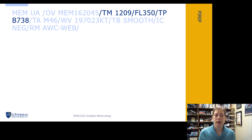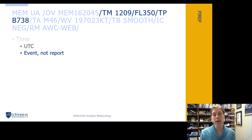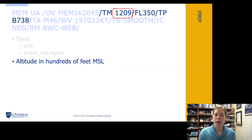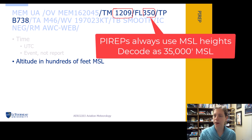Next we have what time the weather was observed, given in UTC of the event — not of when we made the report. In this report, we observed this happening at 1209Z. Then we have our altitude in hundreds of feet in reference to mean sea level, so this one would be at 35,000 feet MSL.